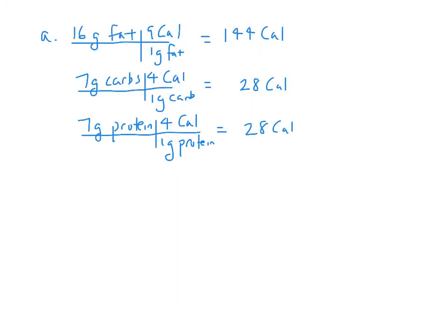To convert from mass to calories, we need to know the number of calories in one gram of that biomolecule. Here are the conversion factors. Based on the measured masses of fat, carbs, and protein, we can apply significant figures rules to round the number of calories.